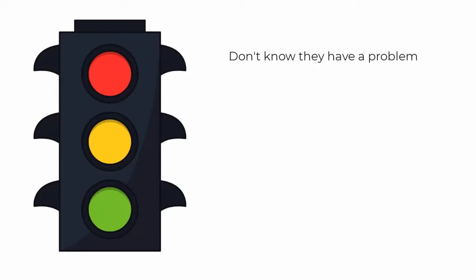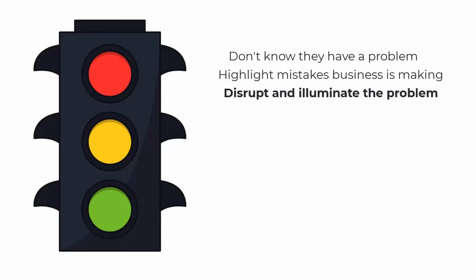The Traffic Light Method starts with red, then amber, then green. When someone is at red, they don't know they have a problem. The information an accountant needs to create at this stage highlights the mistakes a business might be making from using their current accountant — for example, 'The five big mistakes a restaurant makes when choosing their accountant.' Your job at red is to disrupt and illuminate the problem.